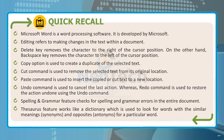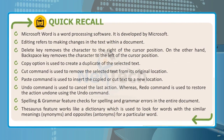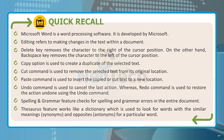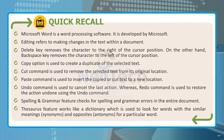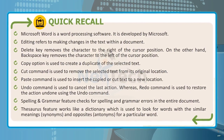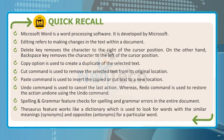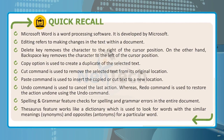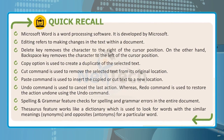Quick Recall. Microsoft Word is a word processing software developed by Microsoft. Editing refers to making changes in the text within a document. The Delete key removes the character to the right of the cursor position; the Backspace key removes the character to the left of the cursor position. The Copy option creates a duplicate of the selected text. The Cut command removes the selected text from its original location. The Paste command inserts the copied or cut text to a new location. The Undo command cancels the last action, whereas the Redo command restores the action undone by the Undo command. The Spelling and Grammar feature checks for spelling and grammar errors in the entire document. The Thesaurus feature works like a dictionary used to look for words with similar meanings, synonyms, and opposites — antonyms — for a particular word.